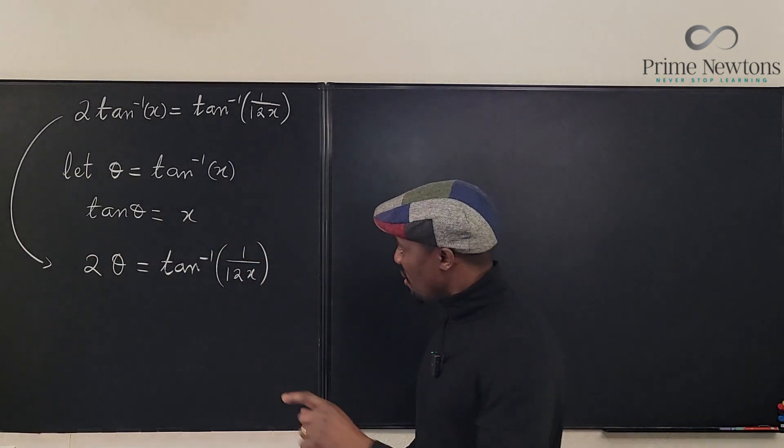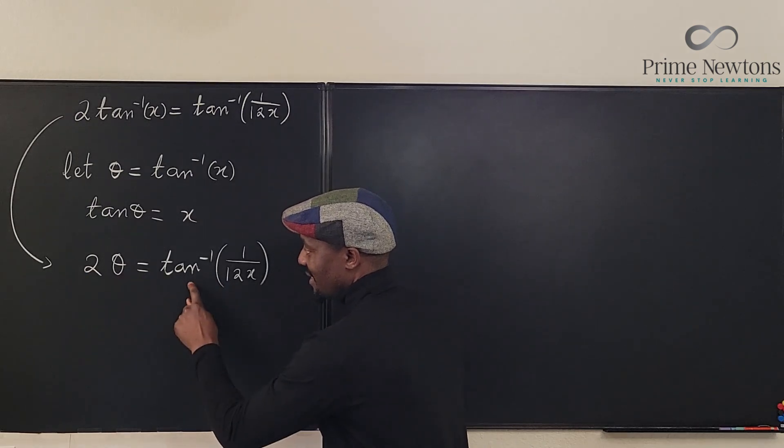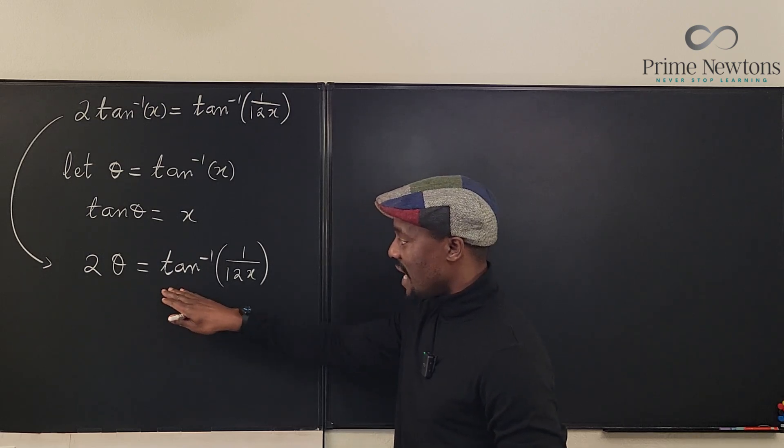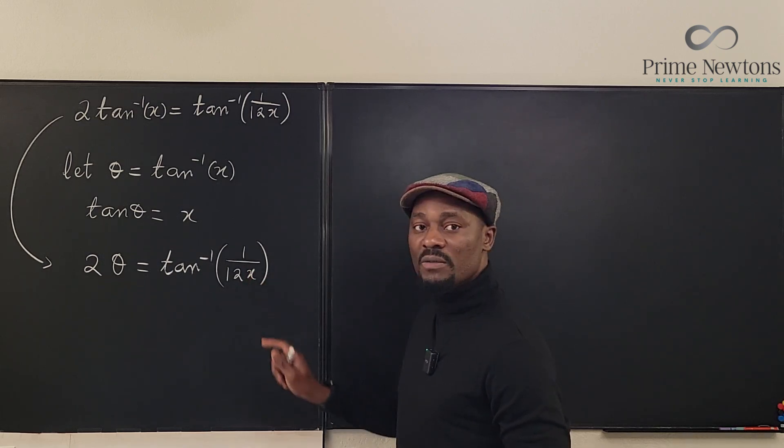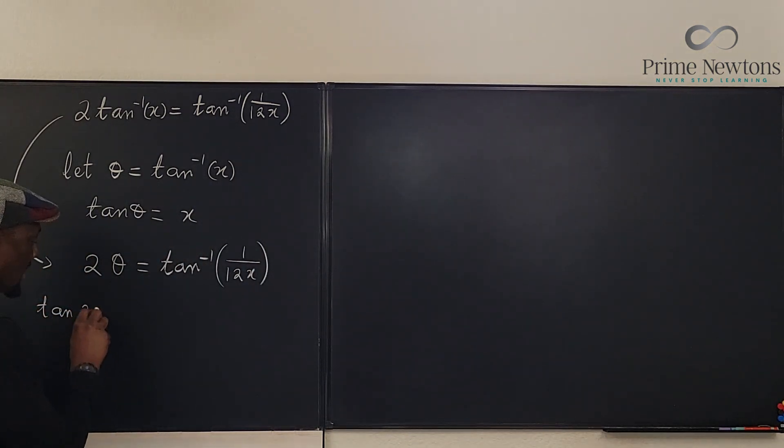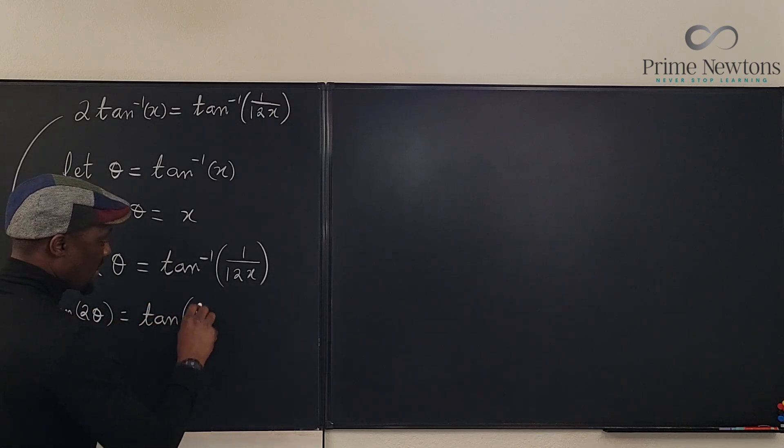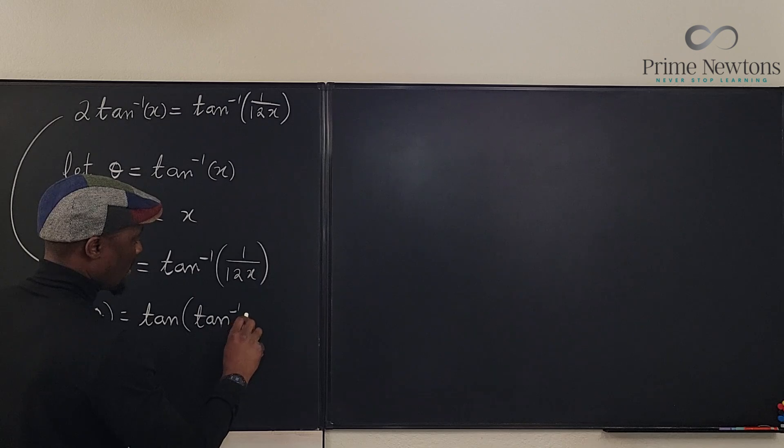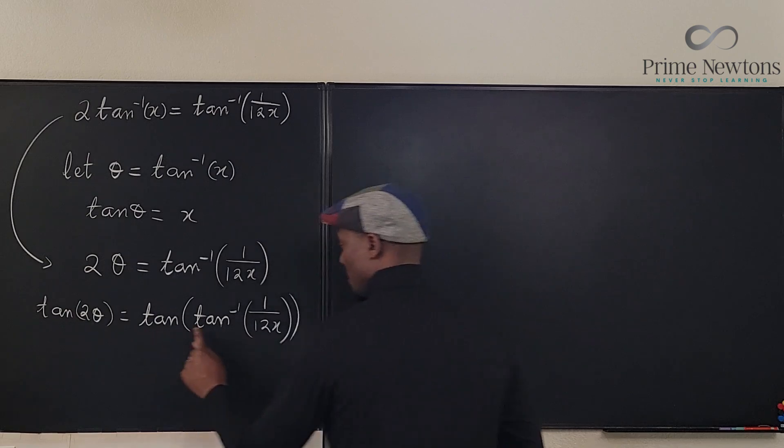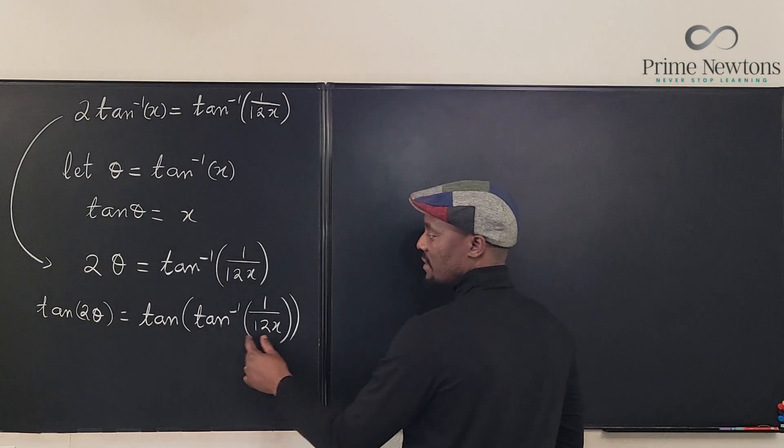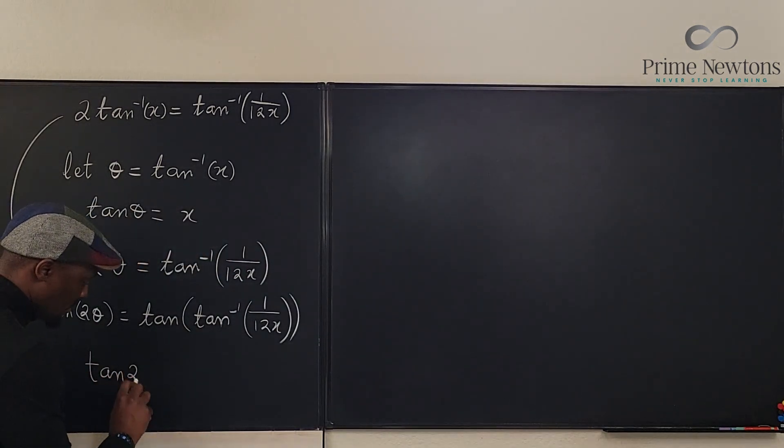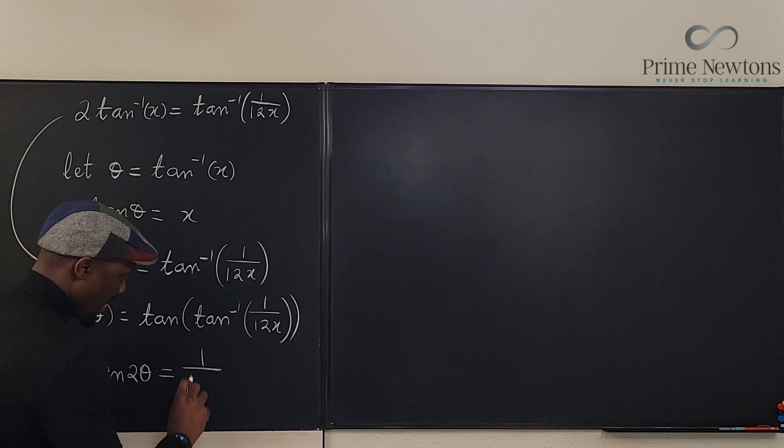So now it becomes easy because we can free this guy by taking the tangent of both sides. So if I take the tangent of this I get tan 2 theta. If I take the tangent of this side I'm going to free this guy, I get 1 over 12x. So what we have is tan 2 theta will be equal to tan of arc tan of 1 over 12x. So this guy breaks this guy, so we have a free 1 over 12x and on the left hand side I have tan 2 theta. So I have tan 2 theta is equal to 1 over 12x.